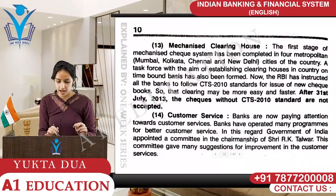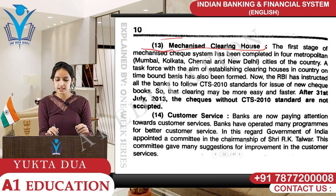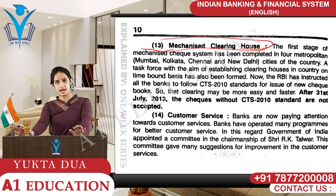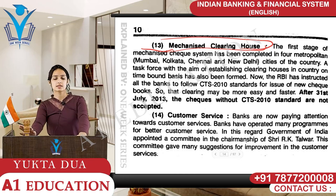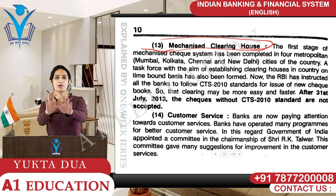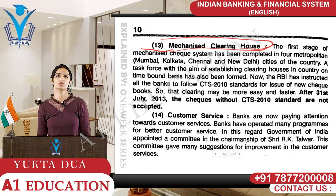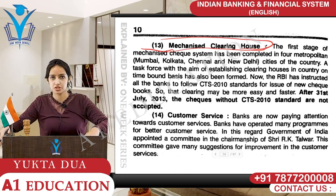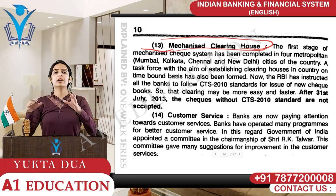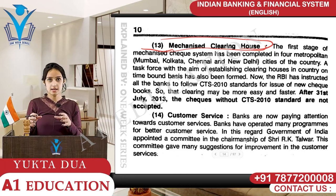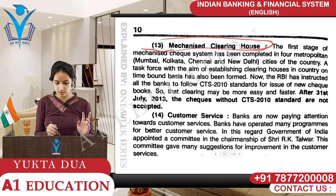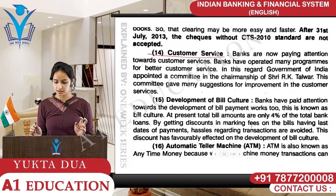Then comes mechanized clearing house. All commercial banks have to keep a certain percentage of cash or gold with the Reserve Bank of India as security, so that if any bank runs out of cash or fails, the Reserve Bank of India can help. If a transaction is happening between the Reserve Bank of India and two banks, it can be adjusted from their assets - that is the mechanized clearing house. Customer service has also improved considerably.